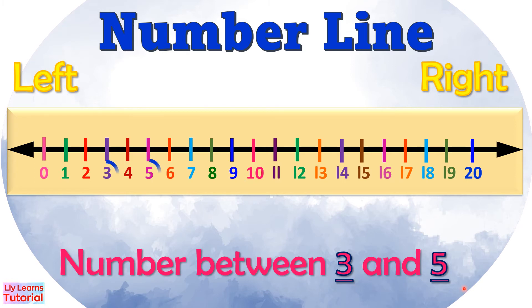First, we circle 3 and 5 on the number line. Then we look at the number in between.